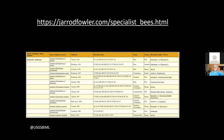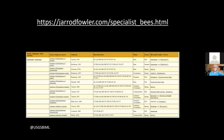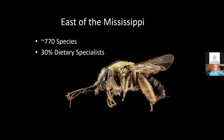You might think this sounds too complicated or those are probably all rare plants — it's the opposite. You can't have a rare plant with a specialist bee because the system would wink out over time. It has to be a common plant, big numbers somewhere. Plant it, they come. It's a good list to start with in any planting strategy, and it's available online. East of the Mississippi, about 770 species, and about 30% of them are dietary specialists — the vulnerable bees.